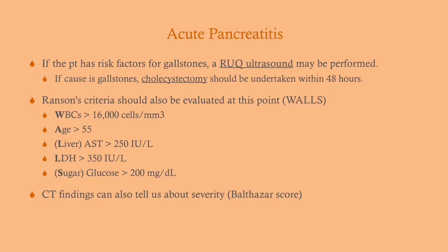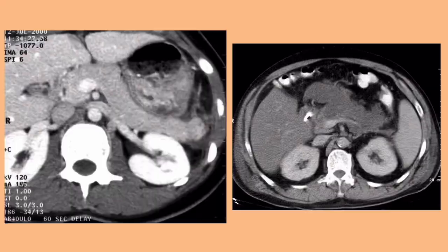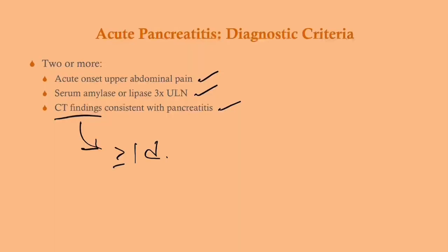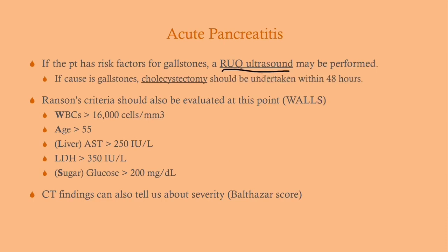If the patient has risk factors for gallstones, you can get a right upper quadrant ultrasound. Some recommend getting this first, but the problem is that ultrasound is not part of the diagnostic criteria, so if findings are absent or inconclusive you'll need a CT abdomen anyway. For a patient with a classic presentation of pancreatitis, you might as well just get the CT first.